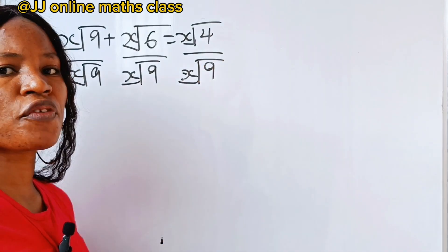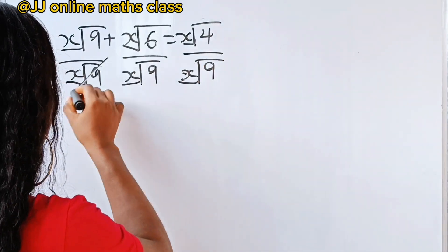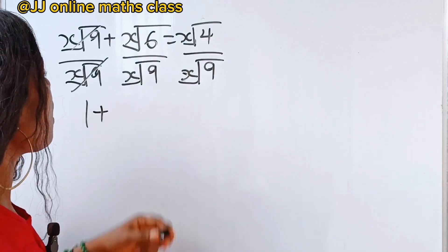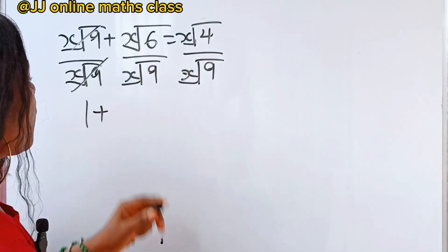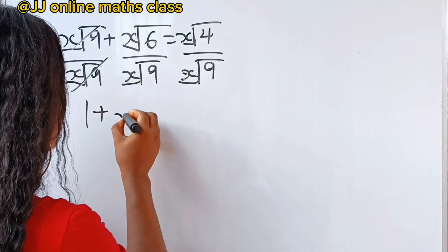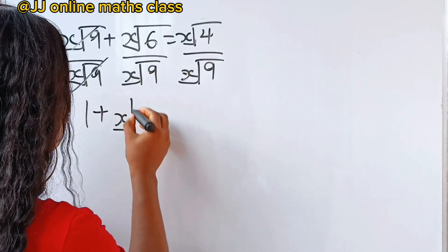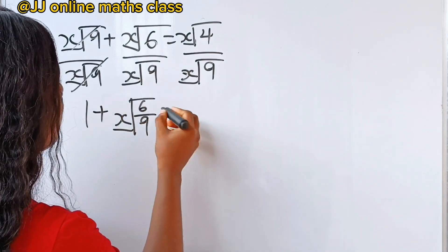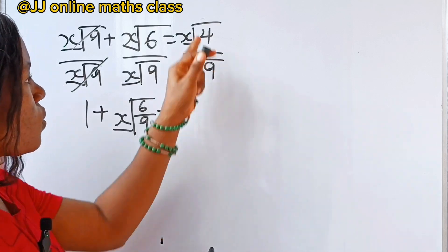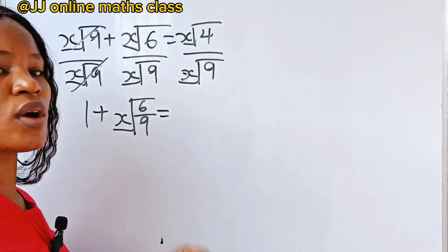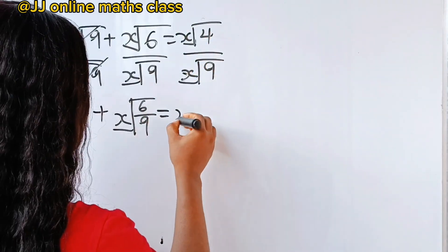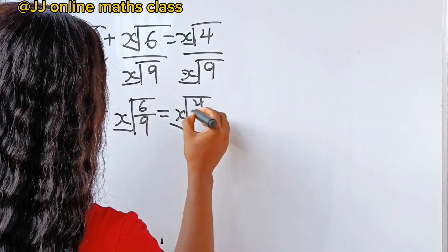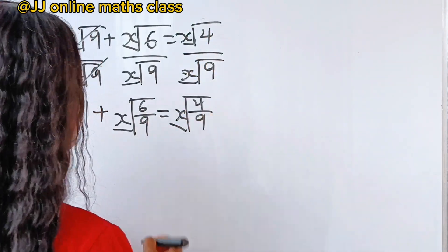Now, if we do that, this will divide itself to give us 1 plus, then this will give us x-root of 6 over 9, which is equal to x-root of 4 over 9.